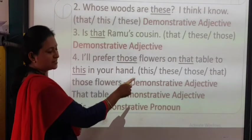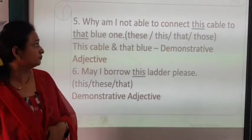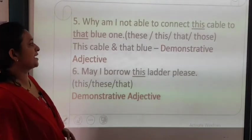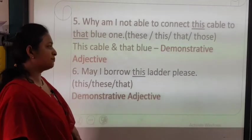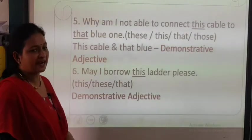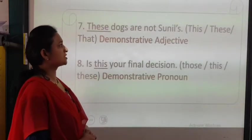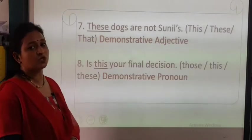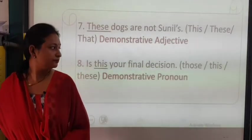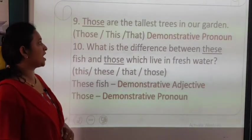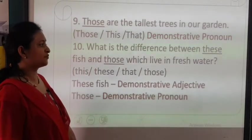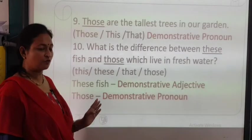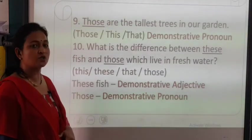Children, just write all these labels on top. 'Why am I not able to connect this cable to that blue one?' — 'this cable' and 'that blue' are demonstrative adjectives. 'May I borrow this ladder please?' — 'this' is a demonstrative adjective. 'These dogs are not Sunil's' — demonstrative adjective. 'Is this your final decision?' — 'this' here is a demonstrative pronoun. 'Those are the tallest trees in our garden' — 'those' is a demonstrative pronoun. 'What is the difference between these fish and those which live in fresh water?' — 'these fish' is a demonstrative adjective and 'those' is a demonstrative pronoun.